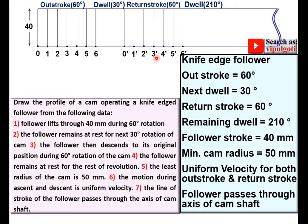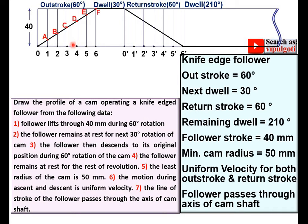For uniform velocity, you have to draw a straight inclined line for the outstroke. For the dwell it should be horizontal. Then for the returnstroke, once again it is a straight inclined line. And for the second dwell it is horizontal. Remember: for uniform velocity, both outstroke and returnstroke have a straight inclined line. Now mark the intersection points and give the names A, B, C, D, E, F. Similarly for the returnstroke, give the names G, H, I, J, K, L. This is your displacement diagram.